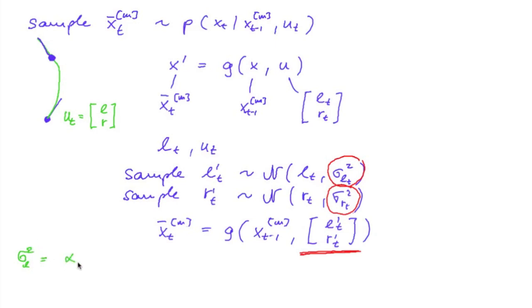you remember we set up those two equations for the left and right variance, namely a factor alpha 1 times the left control squared plus alpha 2 times left minus right squared. And the reasoning was that the variance depends on the driven distance and also on the difference of the left and right track.